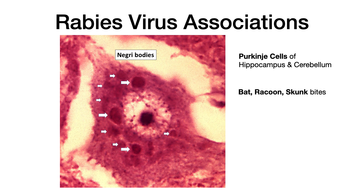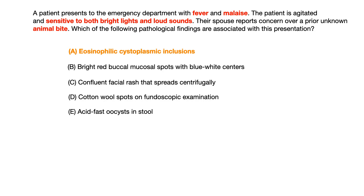One more thing about Negri bodies: you're going to see them in the Purkinje cells of the hippocampus and the cerebellum. That may be useful because if you know what central nervous system tissue looks like histologically, when you see a slide like this, you can give yourself a hint — you're looking at central nervous system tissue, so it's something deposited in a CNS cell or organelle, in this case Negri bodies.